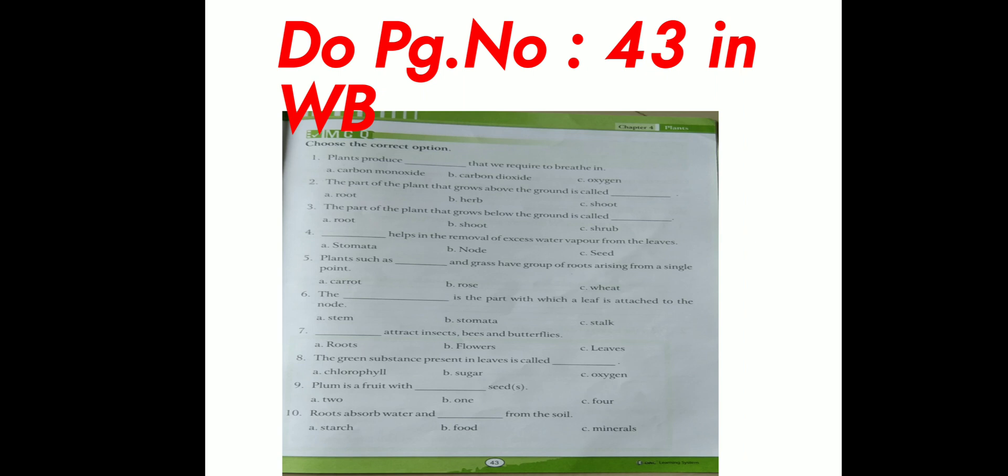Next question. The dash is the part with which a leaf is attached to the node. Option A, stem. Option B, tomato. Option C, stalk.